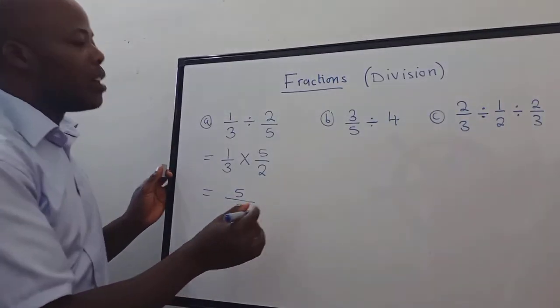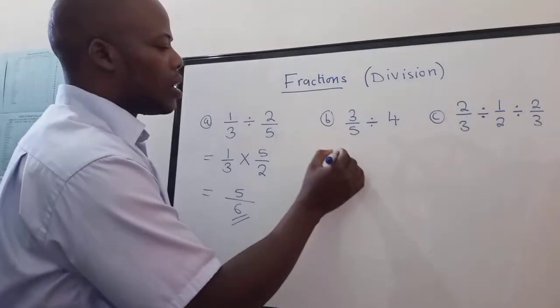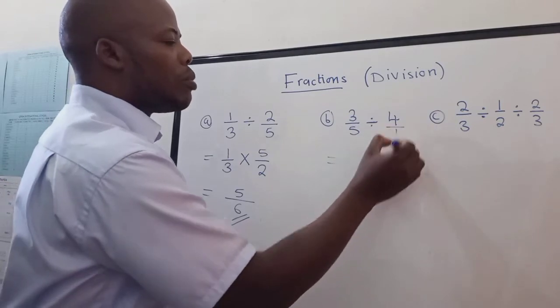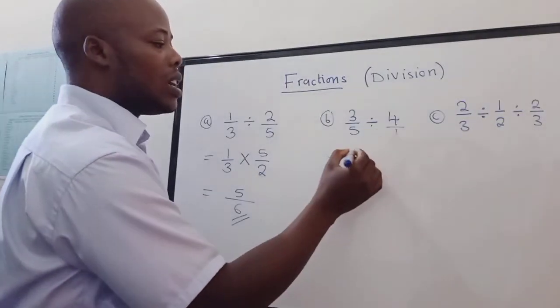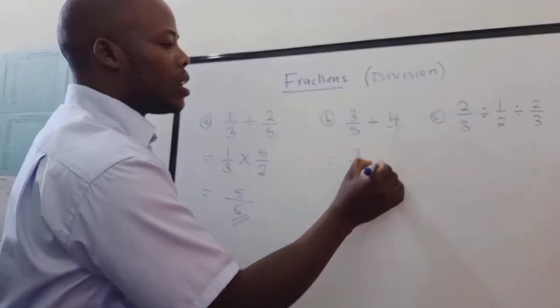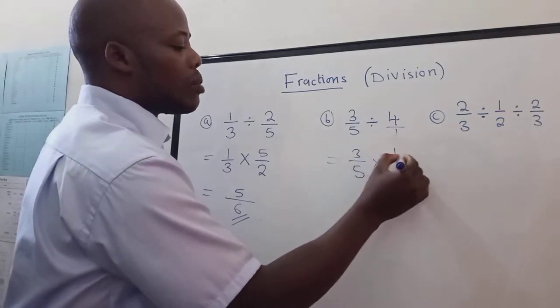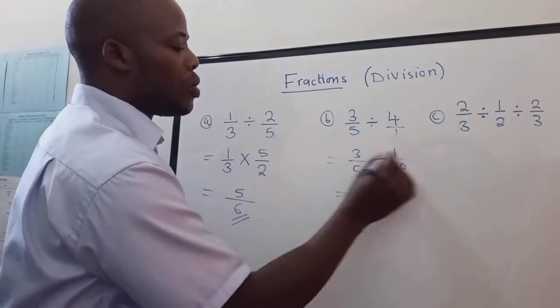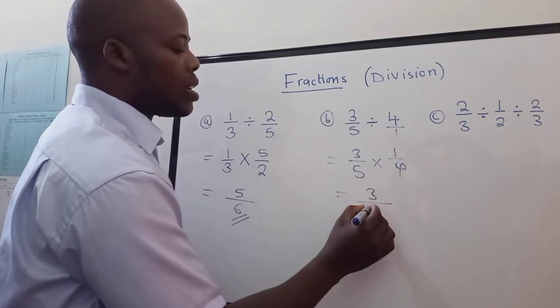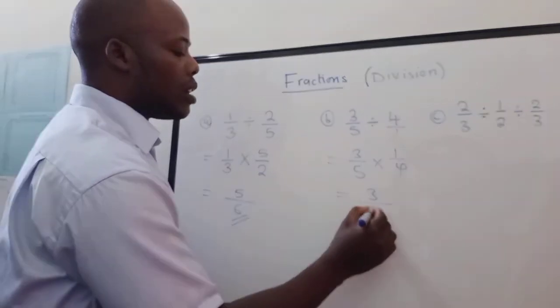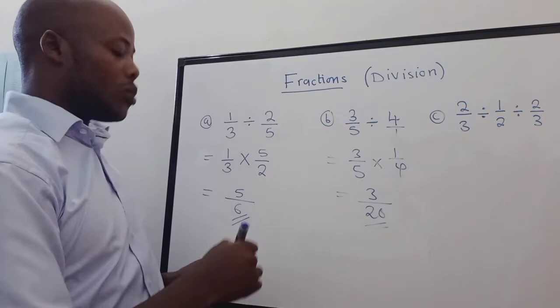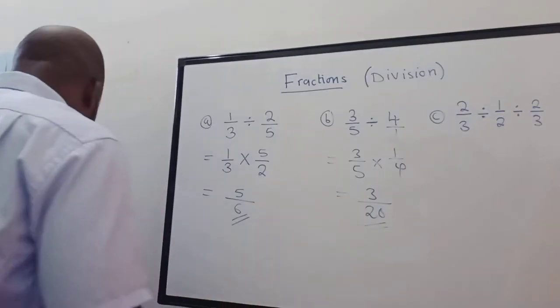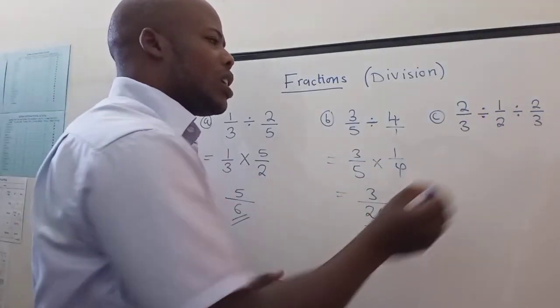Also here you do the same. Here put a one to make this a fraction, reciprocate, you're getting something like this. You multiply, you're having a three on top and down here when you multiply we're getting a twenty. So this is our solution.